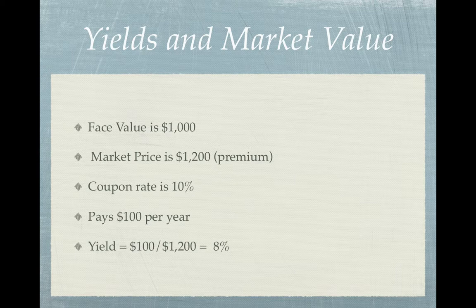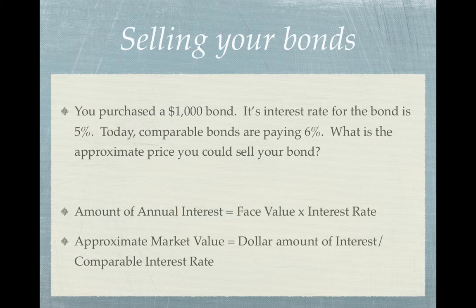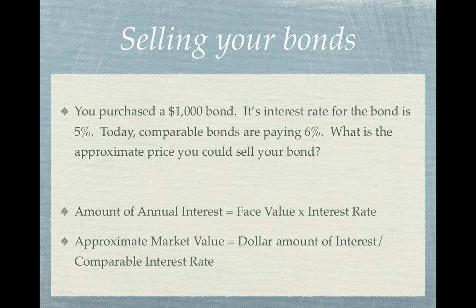Let's presume that you have a wonderful, perfect, beautiful portfolio, including the bond from the state of California. You've lost confidence in the state's growth plan and need to diversify your portfolio a little bit more, so you wish to sell your bond. Five years ago, you purchased the $1,000 bond issued by the state of California, and the interest rate for the bond was 5%. Today, comparable bonds are paying 6%. So what is the approximate price you could sell your bond for? Is your bond going to sell for more or less than $1,000?